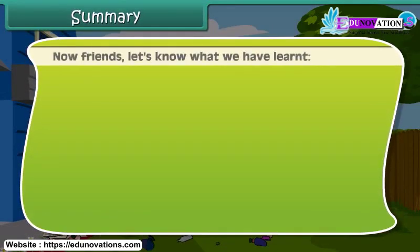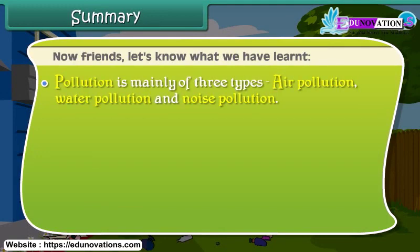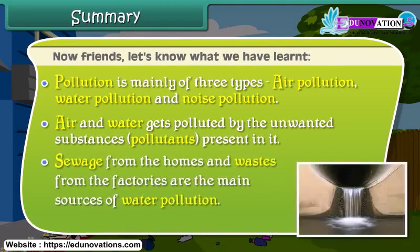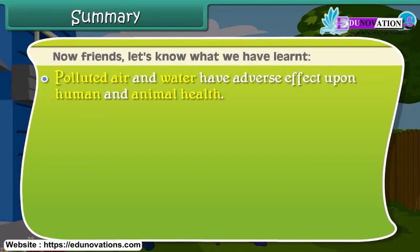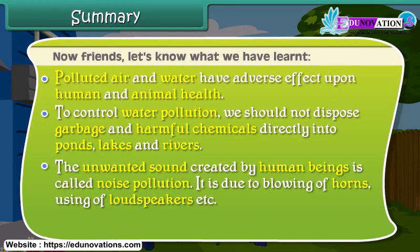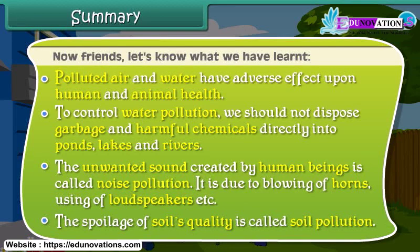Let's recap what we have learned. Pollution is mainly of three types: air pollution, water pollution, and noise pollution. Air and water get polluted by unwanted substances called pollutants. Sewage from homes and wastes from factories are the main sources of water pollution. Polluted air and water have adverse effects on human and animal health. To control water pollution, we should not dispose of garbage and harmful chemicals directly into ponds, lakes, and rivers. The unwanted sound created by human beings is called noise pollution, caused by blowing horns and using loudspeakers. The spoilage of soil quality is called soil pollution.